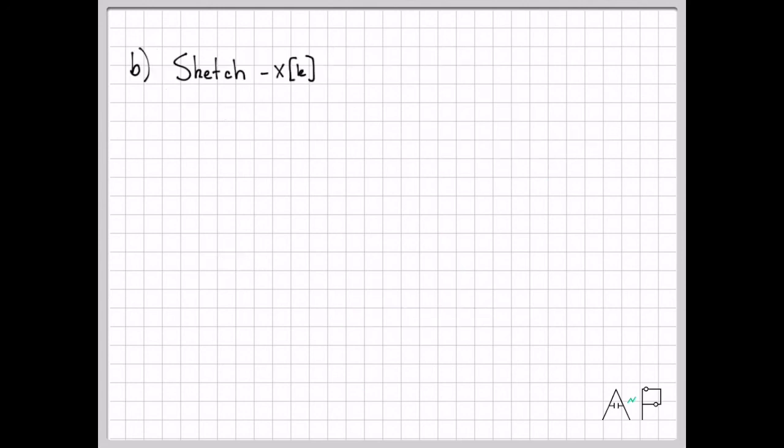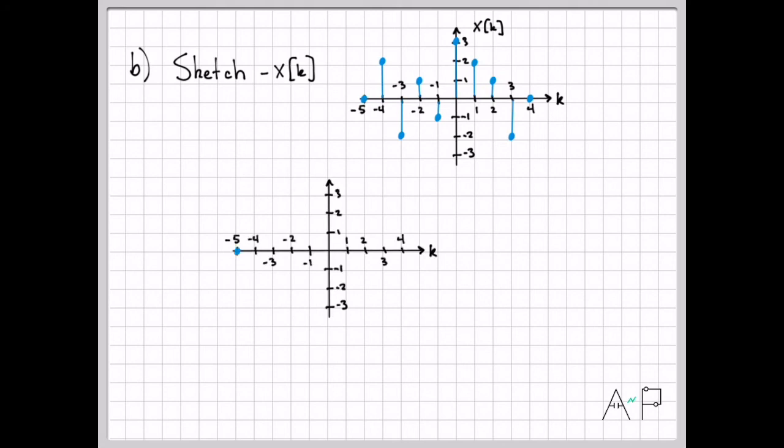Let's go ahead and do one more example. What if we wanted to sketch the signal negative x of k? So first, I'll just go ahead and redraw x of k for you so we know what that looked like on the previous chart. This was our original starting signal x of k. And then to sketch minus x of k, I'm going to follow the exact same process. I want to, at each point in time, look at the original value that I had and then plot the negative of that value here as I sketch the signal minus x of k.